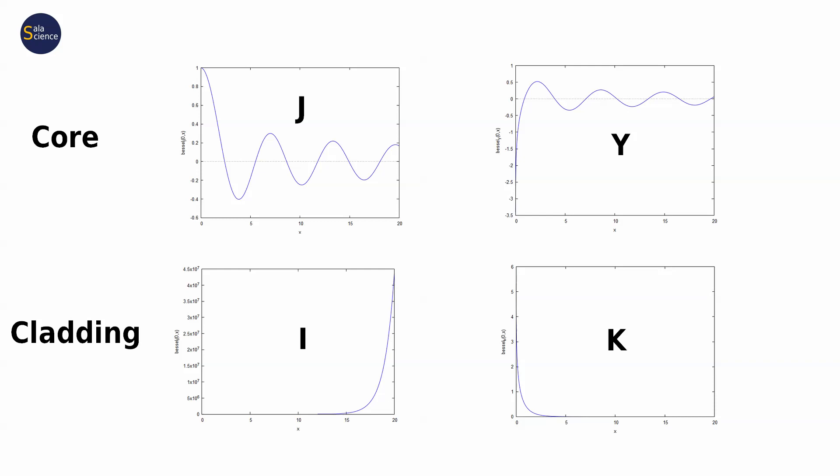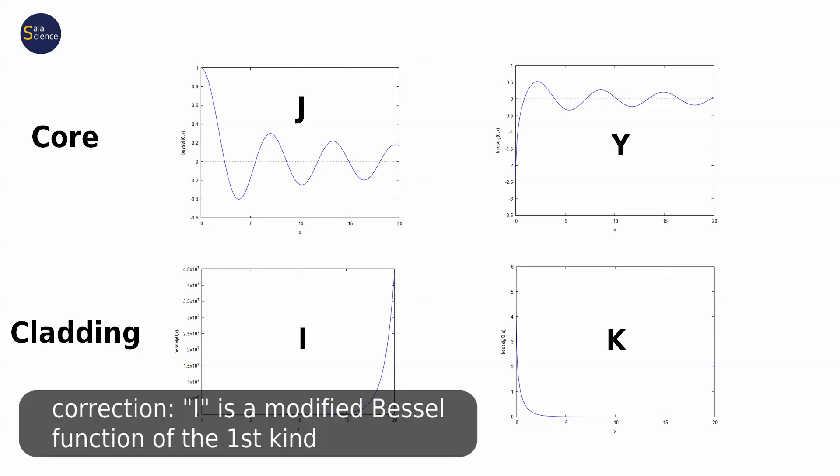On the other hand, function J, a Bessel function of the first kind, looks reasonable. In the cladding, function I, a Bessel function of the second kind, diverges to infinity as we are getting farther from the core. It is not physical.